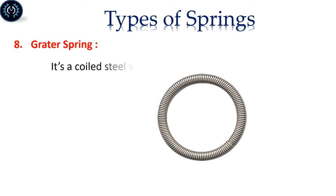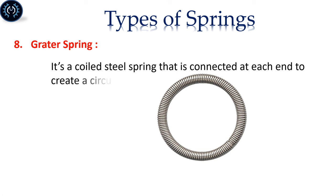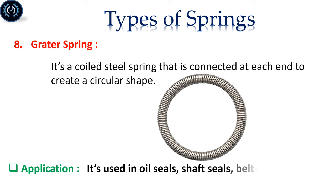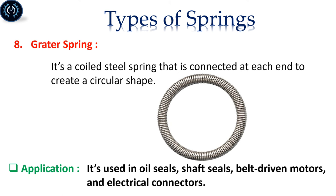Garter Spring: It's a coiled steel spring that is connected at each end to create a circular shape. It's used in oil seals, shaft seals, belt driven motors, and electrical connectors.